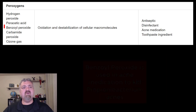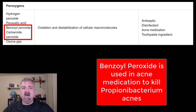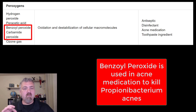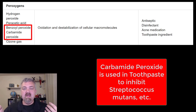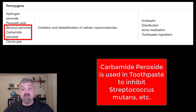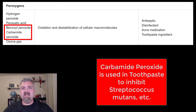A couple more: benzoyl peroxide and carbamide peroxide. Benzoyl peroxide you may have heard of as an acne medication — it's used to kill Propionibacterium acnes, which is associated with acne, though it doesn't cause it in all cases. Carbamide peroxide is found in toothpaste — it helps kill pathogens in the mouth like Streptococcus mutans that can lead to cavities, and it also helps disrupt the biofilms these organisms like to hide behind.